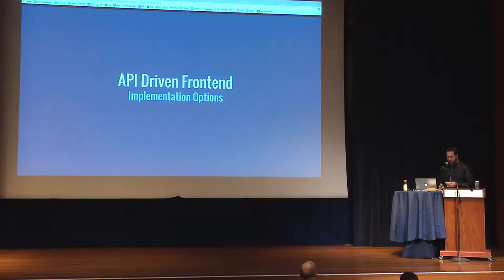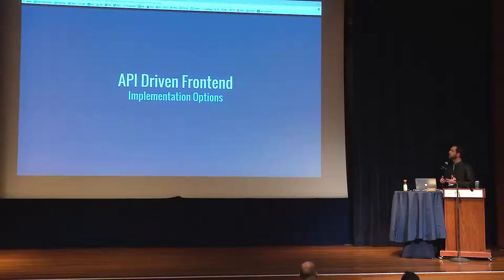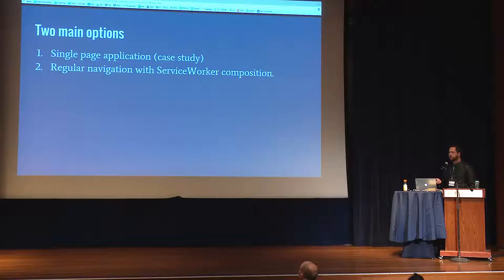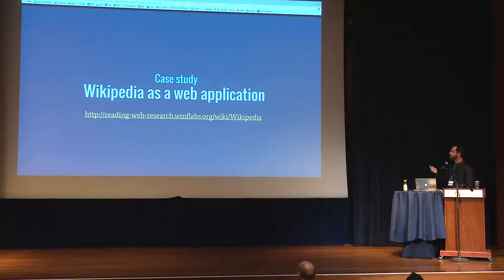Hi everyone, I'm Joaquin. I work with the Reading Web team as a web engineer. What we did this quarter is create a transformation API server that uses RESTBase and pulls content apart so we can assemble it and get these performance benefits. We're going to discuss two approaches: I'll discuss the first one, and then Gabriel will talk about service worker composition, which is a different approach.